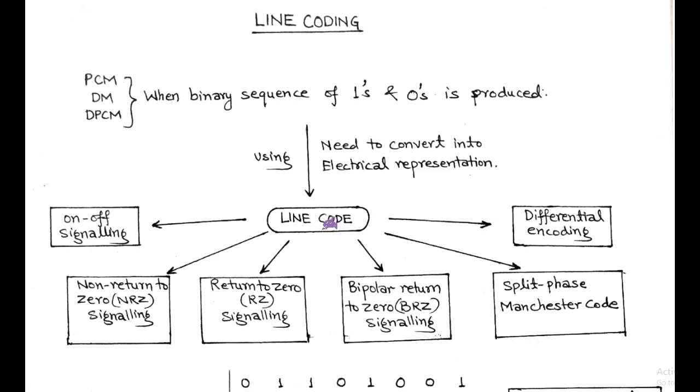Line code is used to convert binary sequence into most appropriate form. These include on-off signaling, non-return to zero signaling (NRZ), return to zero signaling (RZ), bipolar return to zero signaling (BRZ), split phase or Manchester code, and differential encoding.